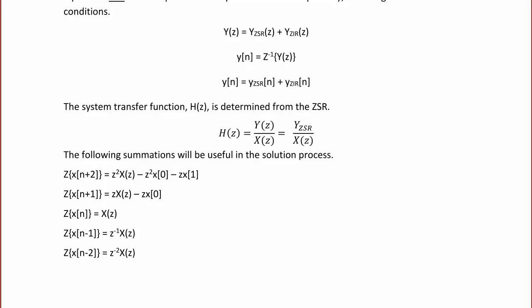The Z transform of x(N−1) is Z⁻¹ X(Z). And the Z transform of x(N−2) is Z⁻² X(Z). Hopefully you can see the pattern here for any terms that are not shown.